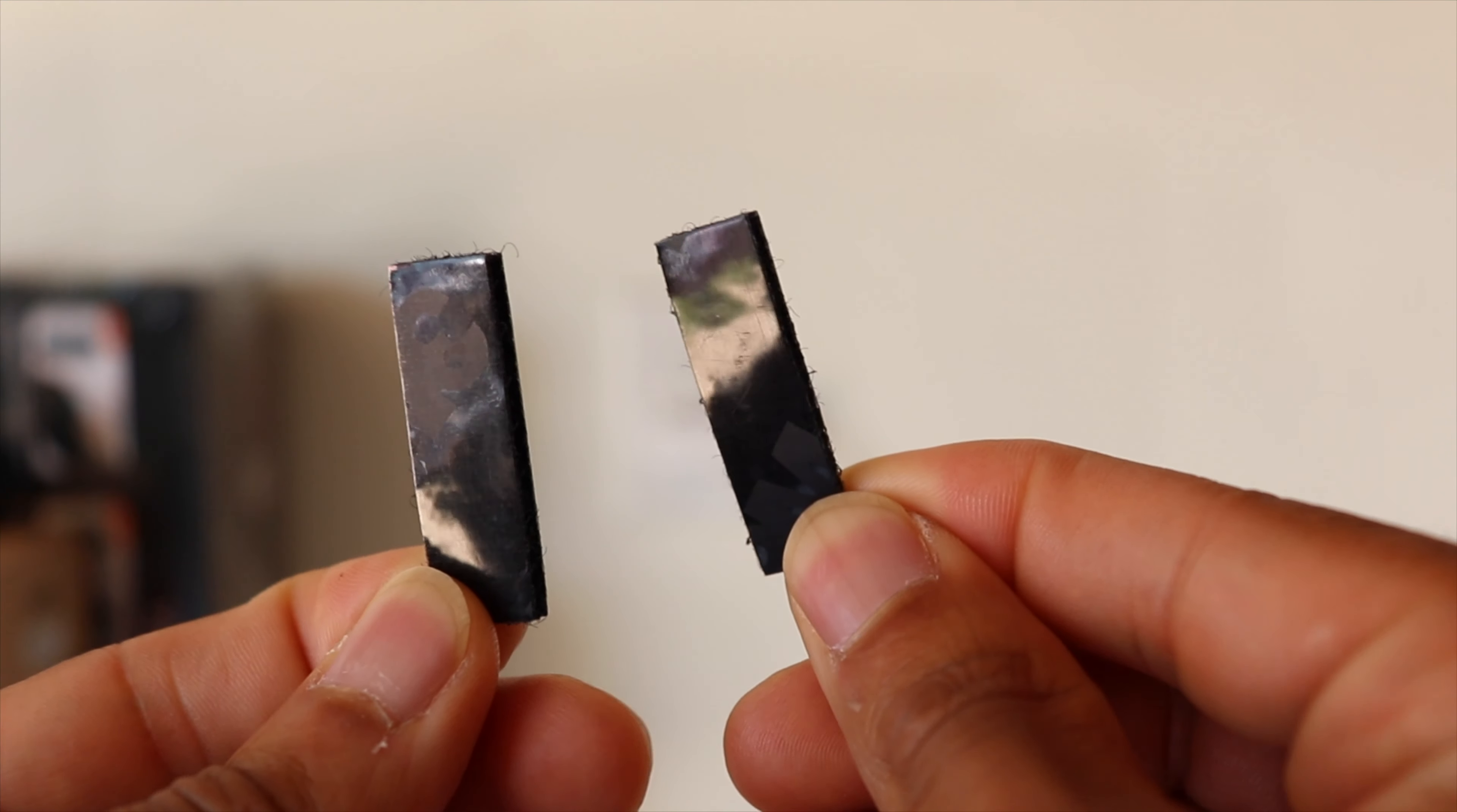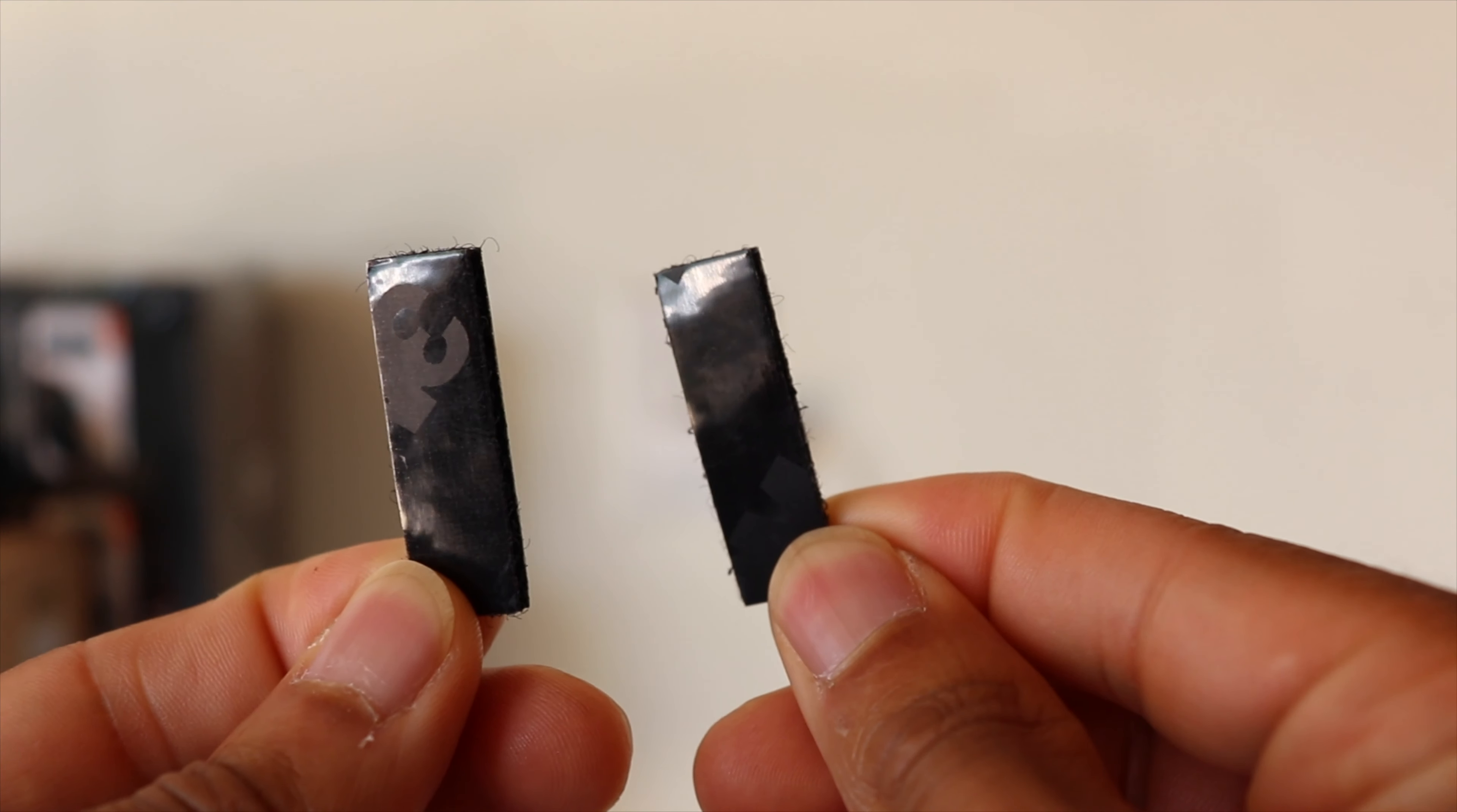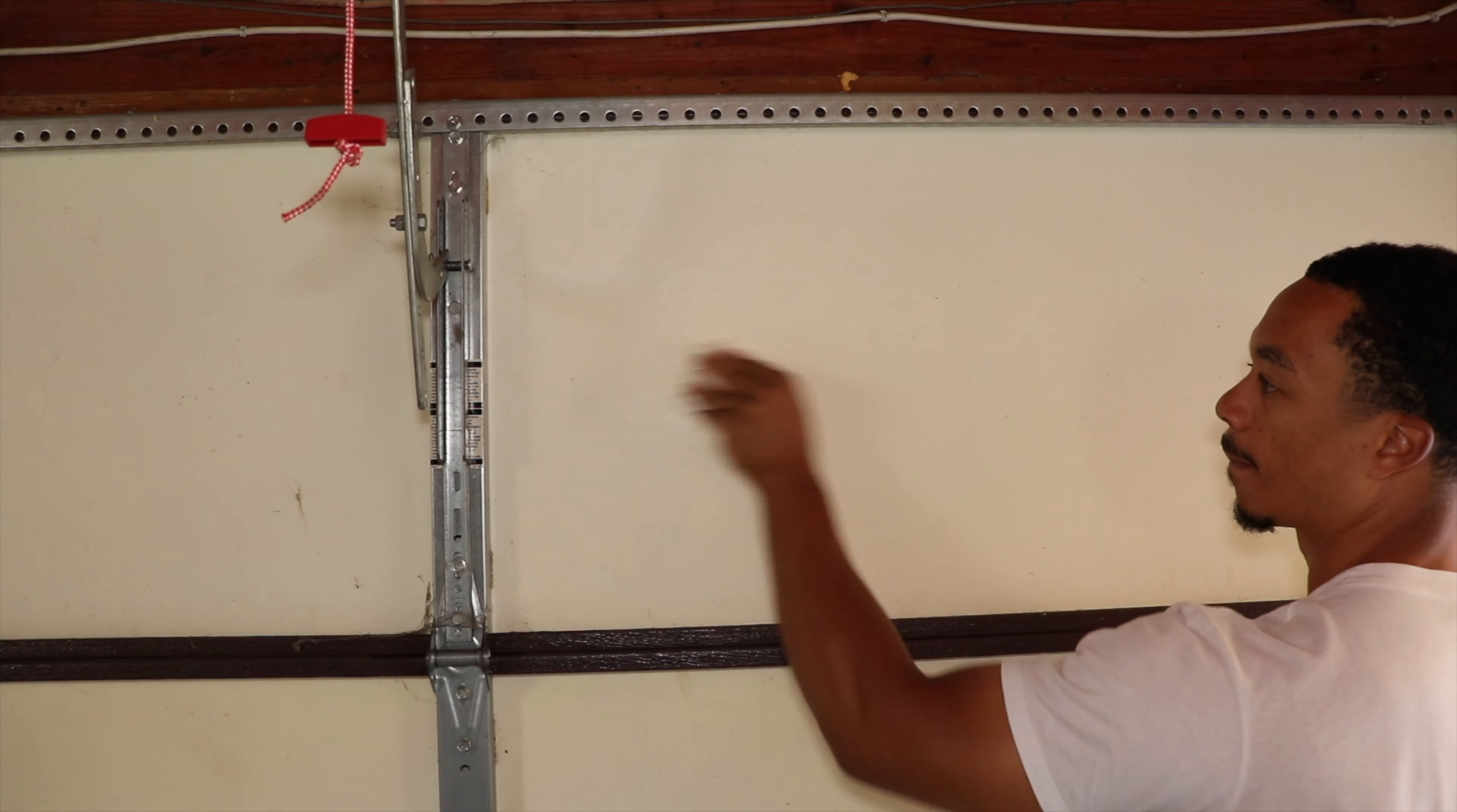So from there, you want to grab the 3M adhesive strips, which are located inside of the bag with the anchors and screws. So we're going to use these strips to attach the door sensor towards the top of our garage door.